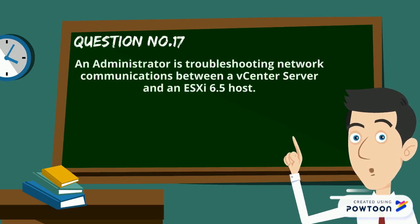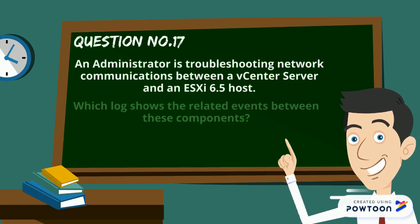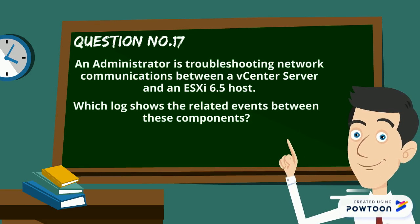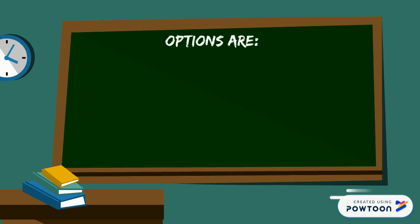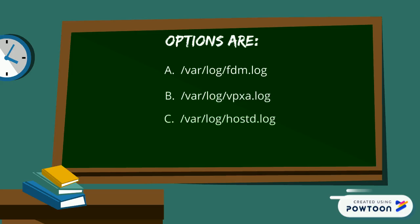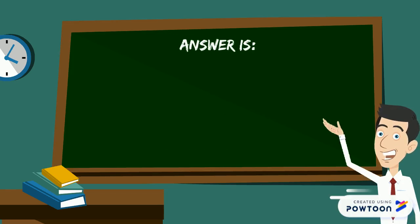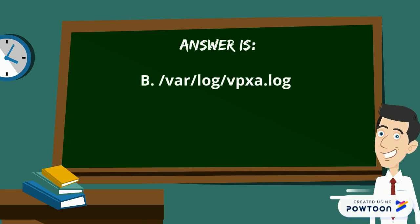An administrator is troubleshooting network communications between a vCenter server and an ESXi 6.5 host. Which log shows the related events between these components? Options are: a) /var/log/fdm.log, b) /var/log/vpxa.log, c) /var/log/hostd.log, d) /var/log/auth.log. The answer is b) /var/log/vpxa.log.